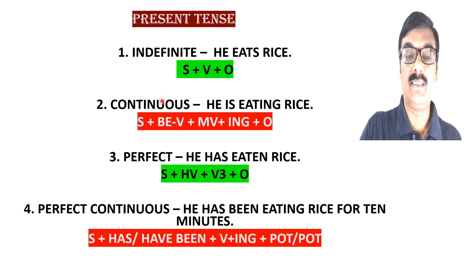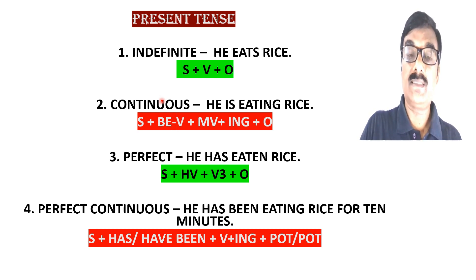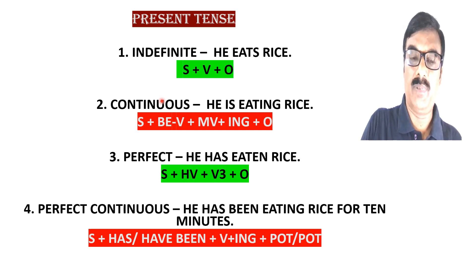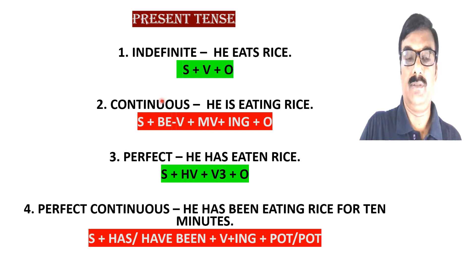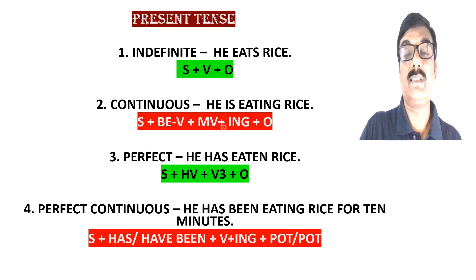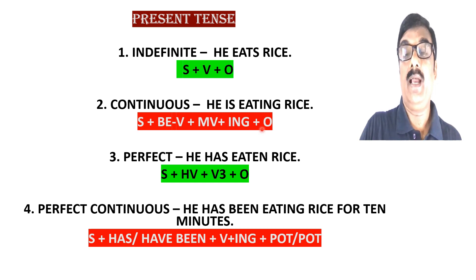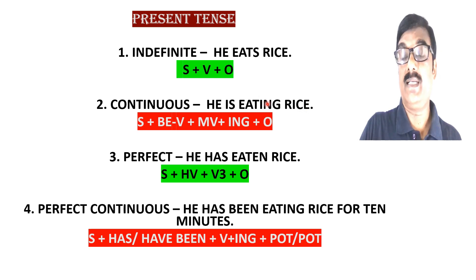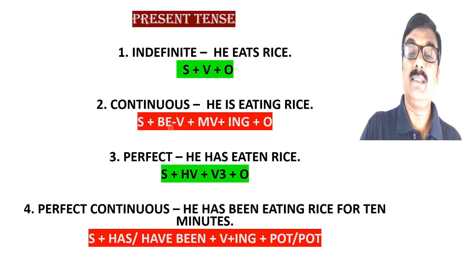Next is present continuous tense. When an action takes place in the present time and it continues for some time, we use present continuous tense. The structure is: Subject + be-verb + main verb + ing + object. Here 'he' is subject, 'is' is the be-verb, 'eating' is the main verb with ing, and 'rice' is the object. So: 'He is eating rice' — this is present continuous tense.